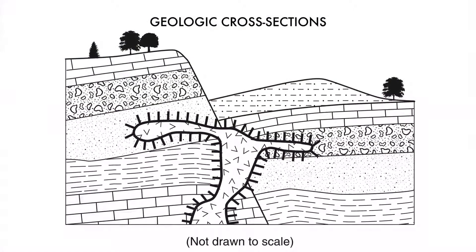It can also look something like this. On a regents, on a class test, this is what a cross-section would look like. It's black and white.